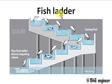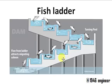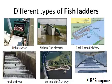A fish ladder is a provision made for the fish to pass from one side of the irrigation structure to the other side — from upstream to downstream or from downstream to upstream. Such a provision is called a fish ladder or fish way.